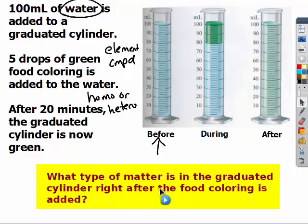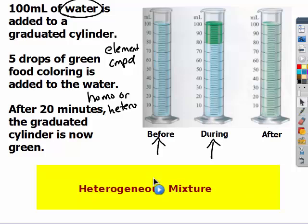What type of matter is in the graduated cylinder after we add food coloring? So in this second graduated cylinder, what type of matter is present? Element, compound, homogeneous or heterogeneous mixture? If you said heterogeneous mixture, you are correct. We have two different layers.